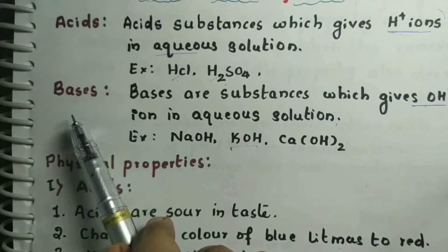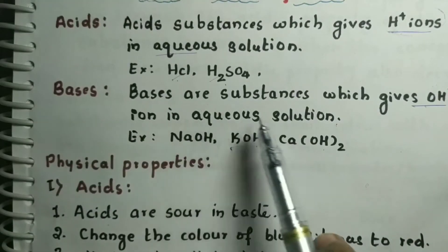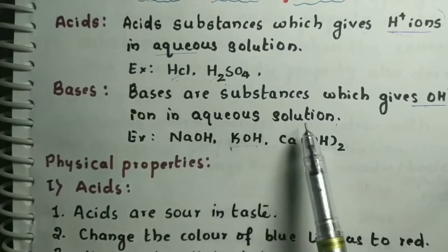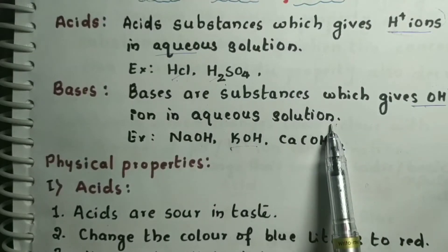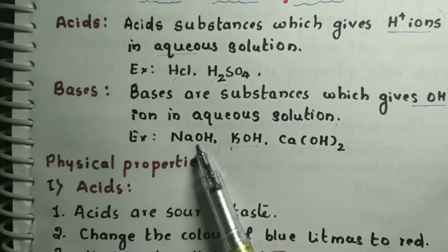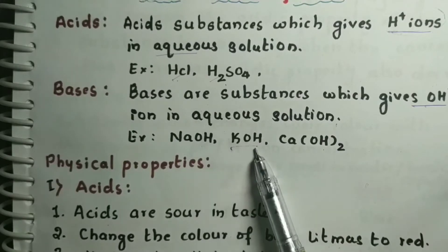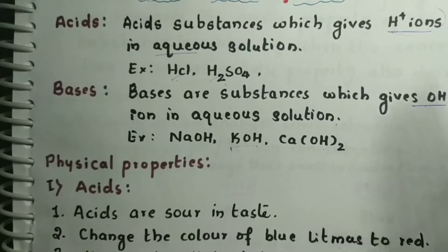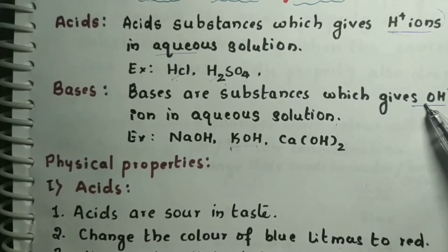Let us see the definition of bases. Bases are substances which give OH- ions in aqueous solution. Some examples of bases are sodium hydroxide, potassium hydroxide and calcium hydroxide. To recap: acids always give H+ ions, and bases always give OH- ions.